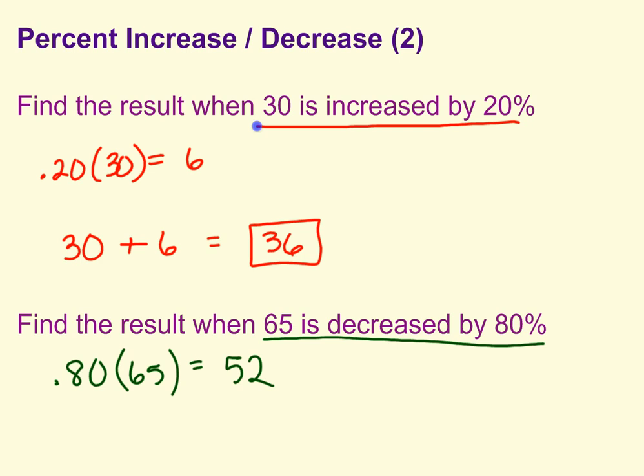So to find the result, you take your starting point, 65. If it's being decreased by 52, should we add 52 or subtract 52? That's right, we're going to subtract 52. So 65 minus 52, we get 13.